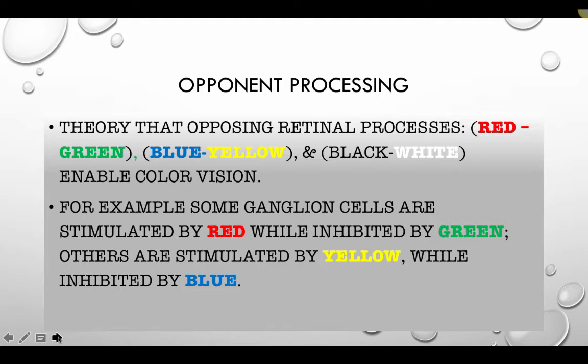Opponent processing is another color theory that attempts to explain why yellow looks like a pure color even to people who are red-green color blind, and it explains color after-images — something trichromatic theory cannot explain. This theory, proposed by Ewald Hering, suggests that after signals leave the cones, color is processed in the ganglion cells in opponent pairs.